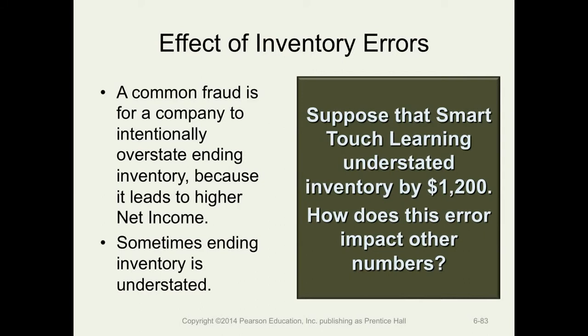When you think about the effect of overstating ending inventory, it could be covering up an error someplace else. In a fraudulent situation, not only does overstating inventory overstate net income that gets closed to retained earnings, but it could be covering cash theft. Cash is taken from the company, but inventory is written up, and that will cover the cash loss.